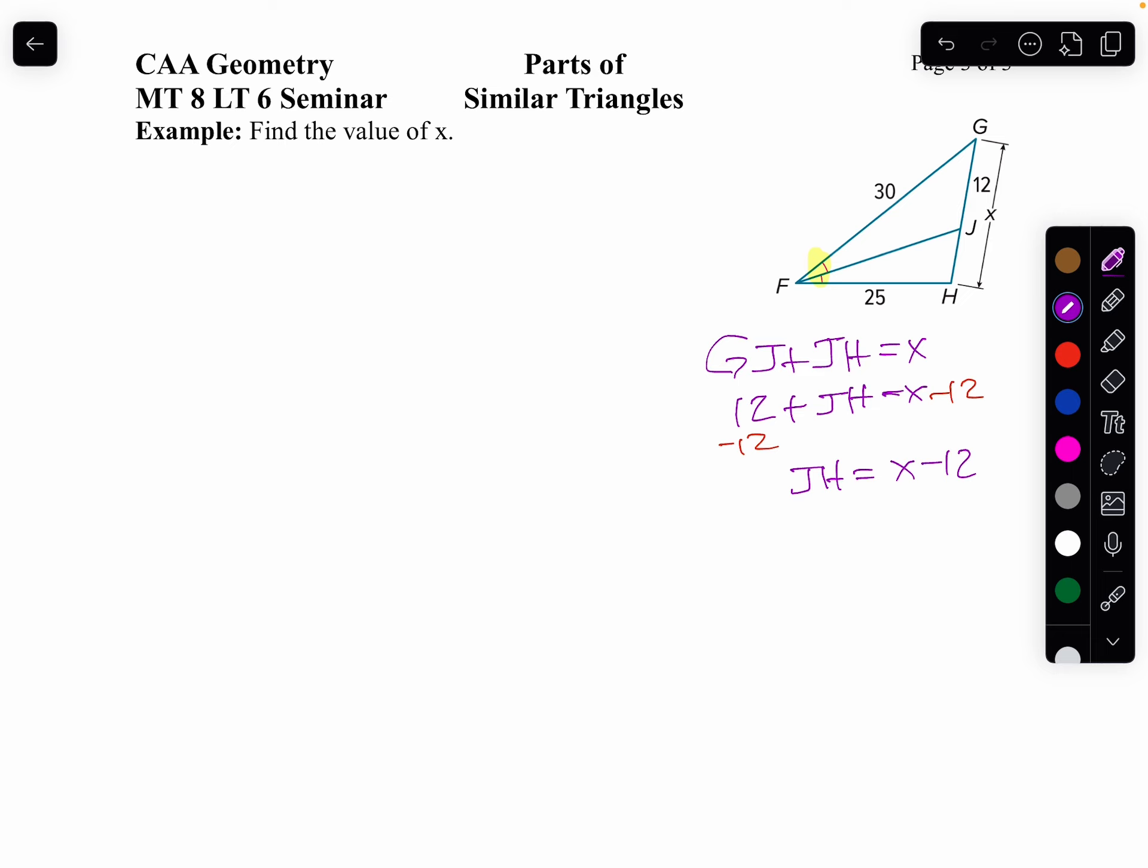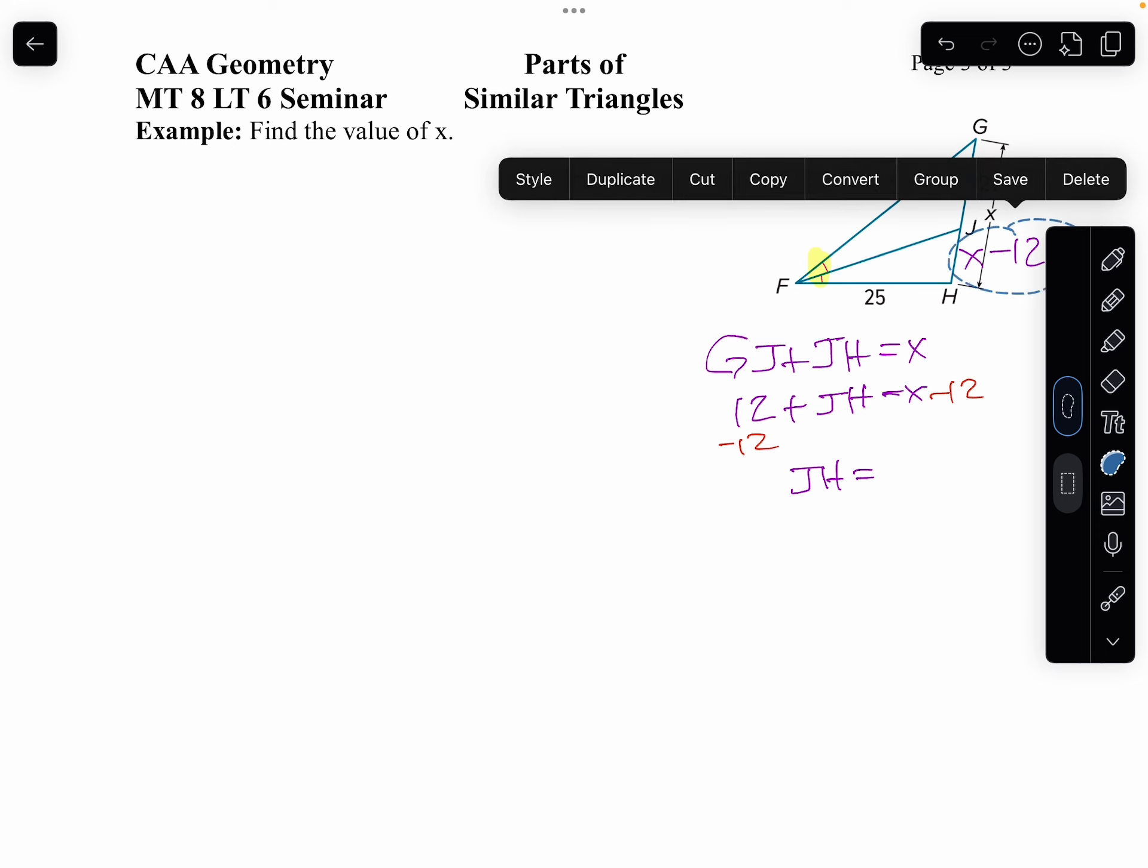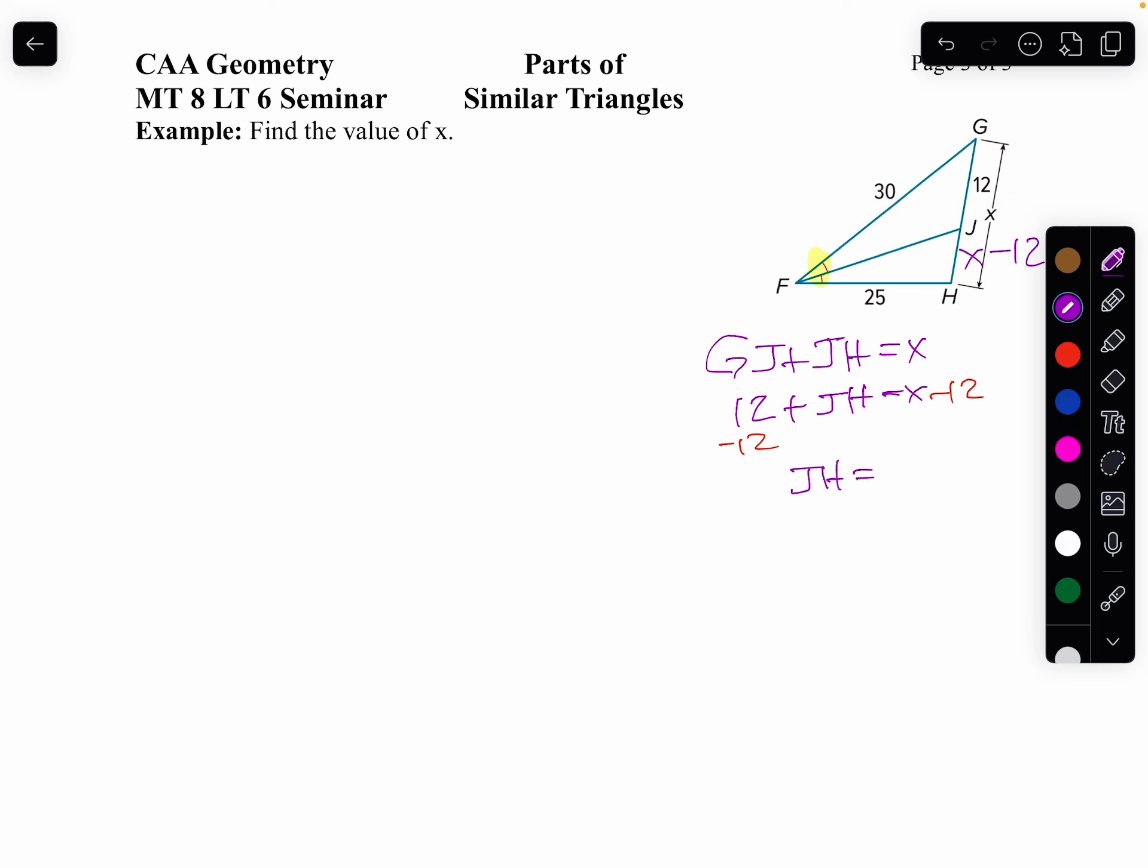So I'm going to say x minus 12 is j to h. Now let's write a proportion. And I like my x in the numerator, so I'm going to go x minus 12 is to 12, as 25 is to 30.